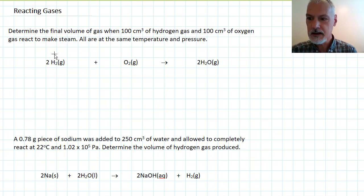In my first problem, I've got 100 cubic centimeters of hydrogen and 100 cubic centimeters of oxygen, and I'm going to make steam. The important thing to note in this question is this particular line right here: all of the gases are at the same temperature and pressure. That is going to allow me to take a bit of a shortcut, which I'll show you shortly.